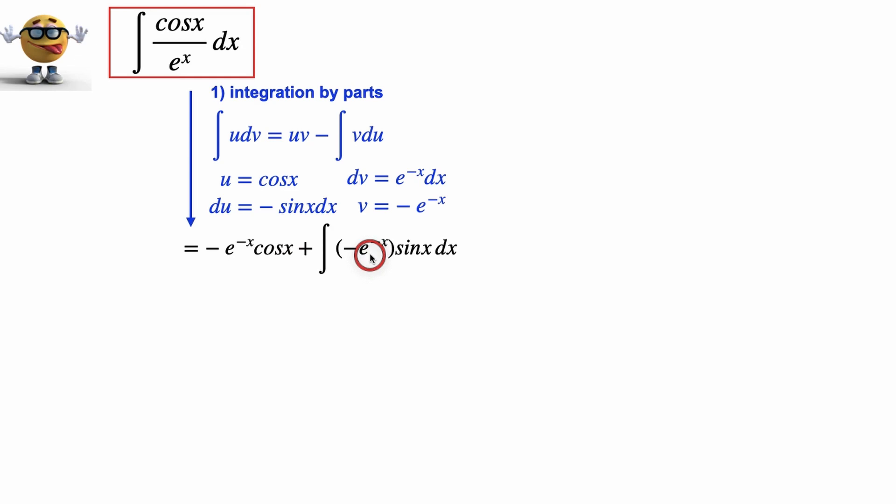At this point it doesn't look like things really helped us. We have the same integral to evaluate, except we just exchanged a cosine for a sine, but this is the trick. We're going to do integration by parts again.